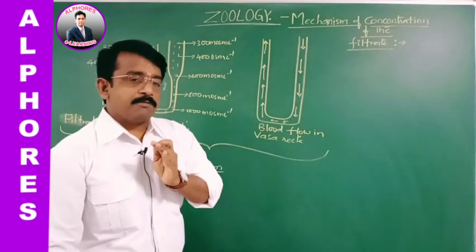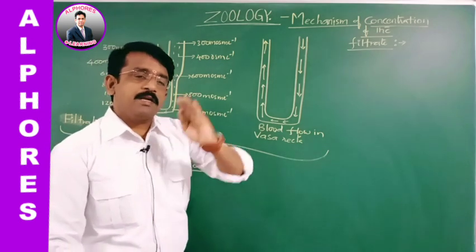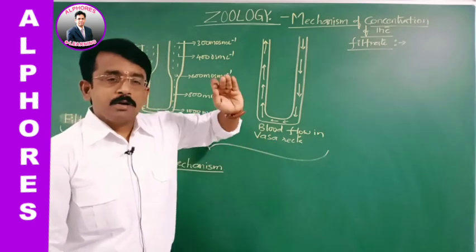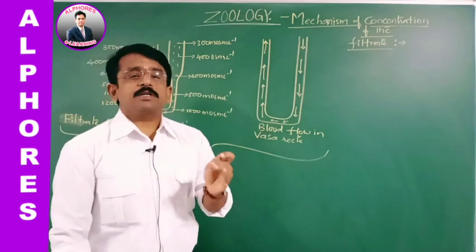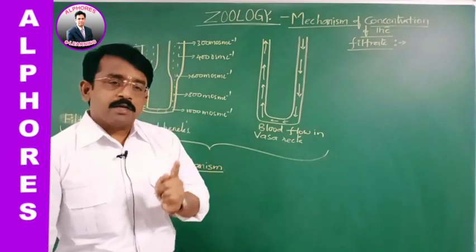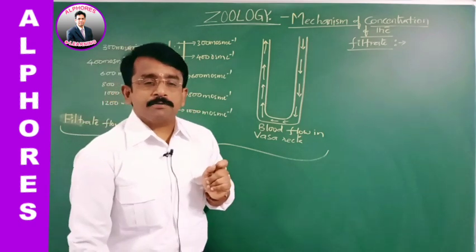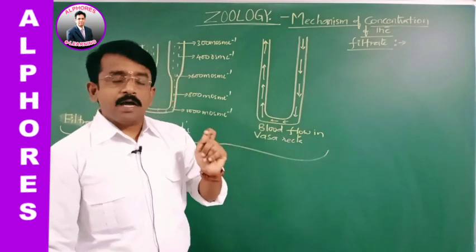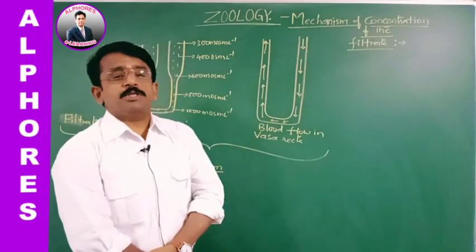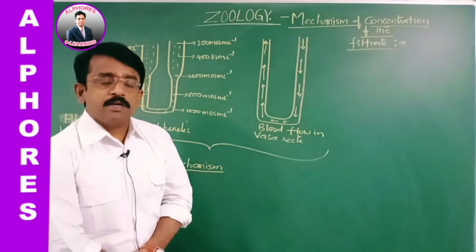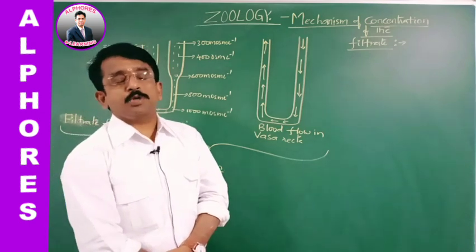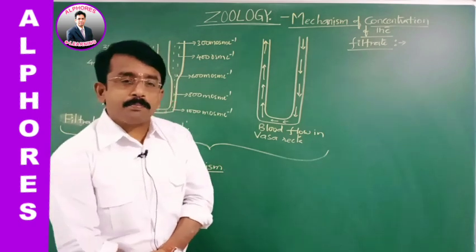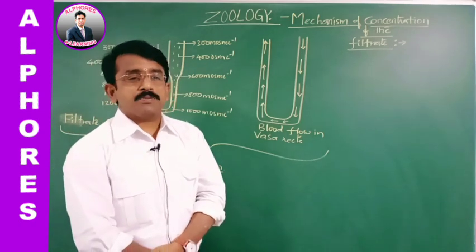Then in the descending limb of the loop of Henle, it becomes hypertonic. The concentration progressively increases towards the hairpin bend. And again in the ascending limb of the loop of Henle, it becomes hypertonic. In the DCT, distal convoluted tubule, it again becomes isotonic. And in the collecting duct, it becomes hypertonic to blood plasma.